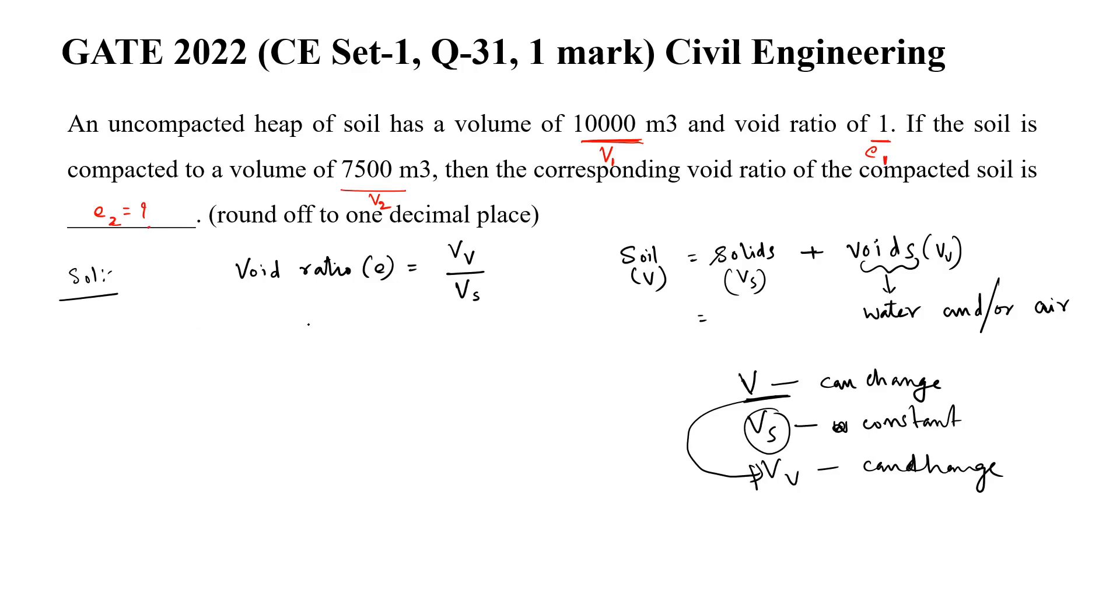Now, here void ratio which is denoted by E, defined by the ratio of Vv to Vs. Let us see. Now let us write the given data first. Given data, what is given data?